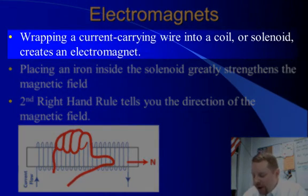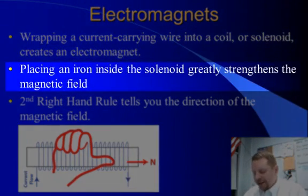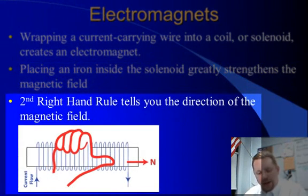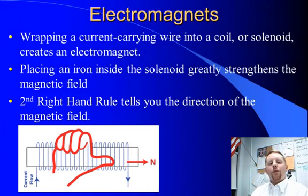Now, wrapping a current carrying wire into a coil or solenoid creates an electromagnet. If you place an iron core inside the solenoid, you get a much stronger magnetic field. Then we can use the second right hand rule to tell us the direction of the induced magnetic field. If you have a solenoid, what you're going to do is wrap the fingers of your right hand around the solenoid in the direction with the coil that the current is flowing. Again, conventional current or positive current is what we're going to use. Wrap your fingers in that direction and the thumb of your right hand will point to the north. Of course, the opposite direction must be the south of the induced magnetic field.